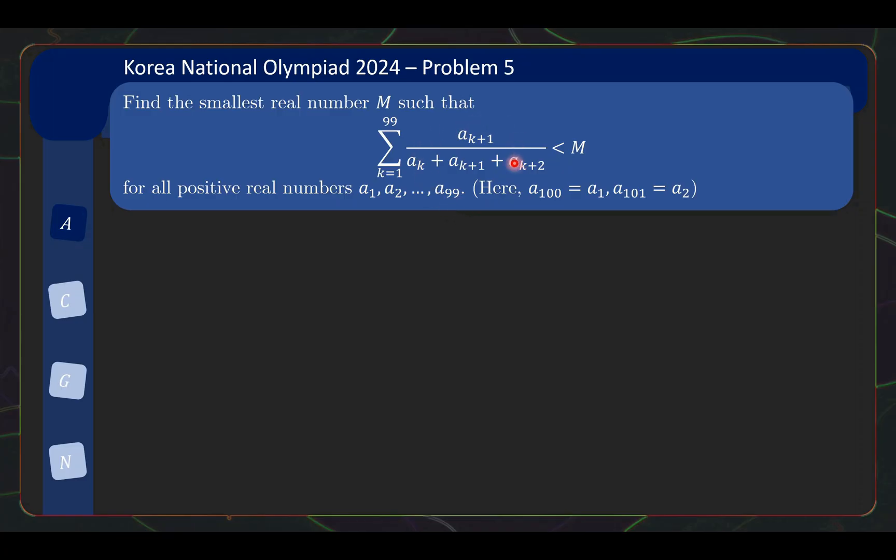Let's study this sum a little further to understand what it means. When k equals 1, we basically have a1, a2, a3 in the bottom, and the middle part a2 will be at the top. Then when k equals 2, we have a2, a3, a4, and then a3 will be at the top. So all the way until k equals 99, we have a99, look back to a1 and a2, and then a1 is at the top. So over here we see that a100 is taken to be a1 and a101 is taken to be a2.